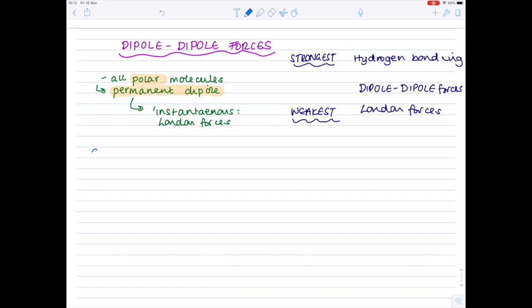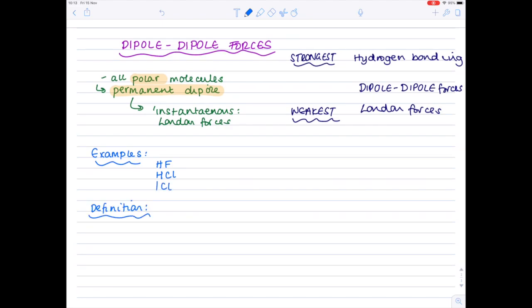Examples of dipole-dipole forces that exist within molecules include hydrogen fluoride, hydrogen chloride, and iodine chloride. If we were to provide a definition, we'd say that in this type of intermolecular force, there is an attraction between the positive end of one permanent dipole and the negative end of another permanent dipole on an adjacent molecule.